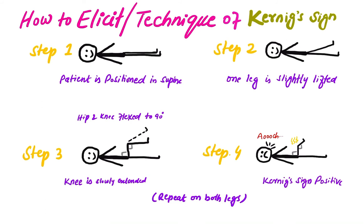How to elicit Kernig's sign: In step one, the patient is positioned supine. In step two, one leg is slightly elevated or raised. In step three, the hip joint and knee joint are flexed to 90 degrees. The knee is then slowly extended upward, and if the patient feels pain, Kernig's sign is positive. Usually, pain is felt after 135 degrees of extension of the knee joint. If Kernig's sign is positive, it indicates inflammation of the meninges. This test is repeated on both legs.